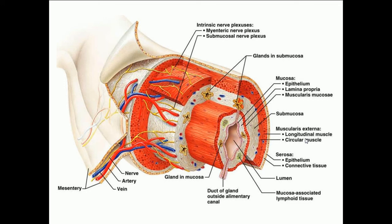Many parts of the GI tract deviate from this generic structural pattern. The esophagus deviates in two ways: its mucosa has stratified squamous epithelium, and its muscularis has skeletal muscle in the superior region, skeletal and smooth muscle in the middle region, and smooth muscle in the inferior region. The stomach deviates from the pattern in that its muscularis has three layers of smooth muscle.